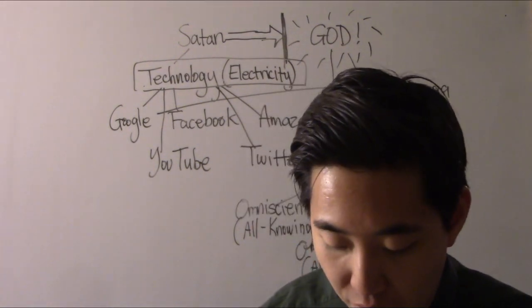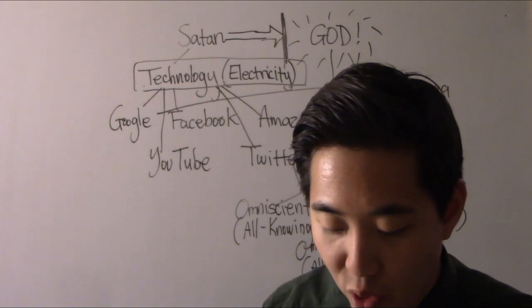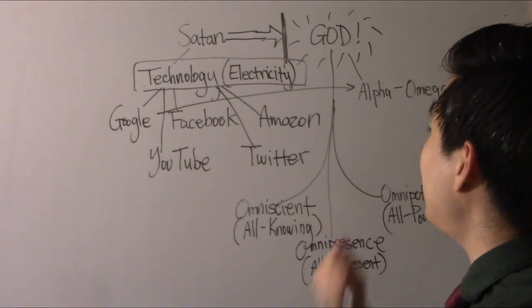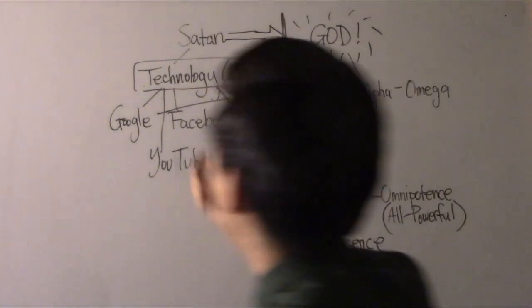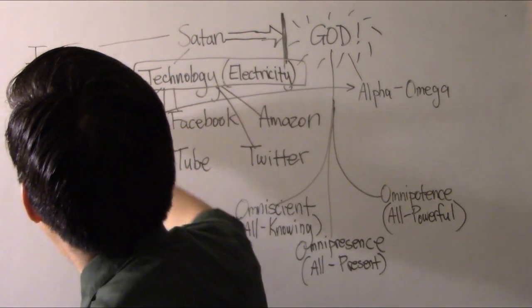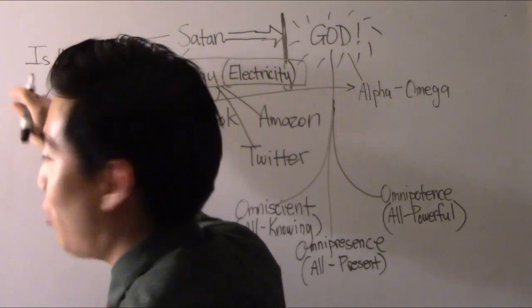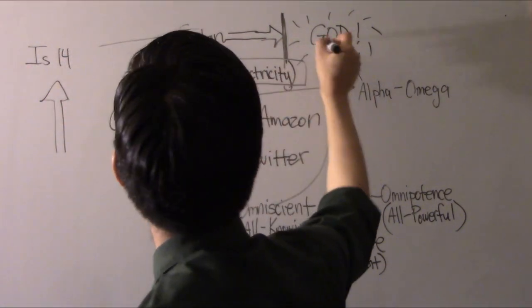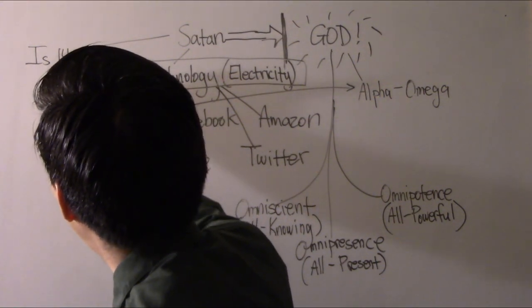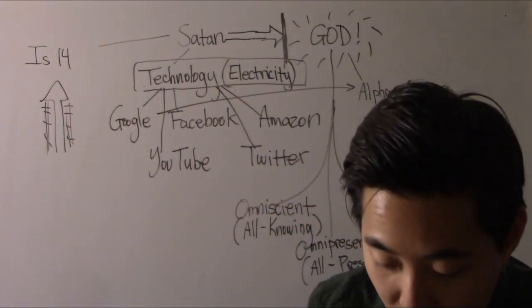Look at Genesis chapter 11. What did God think about man's invention that would reach up to heaven? Isaiah 14, what did Satan say? I will exalt myself above the heights of the cloud, on the sides of the north, above the stars. Satan always wants to go up, right? Because he wants to be like God. So he always wants to go up. And guess what? Mankind did the same thing. They tried to go up.